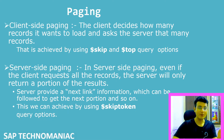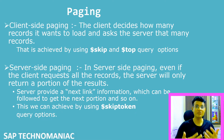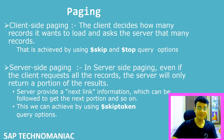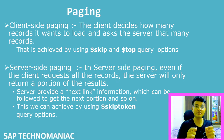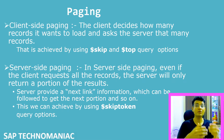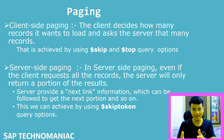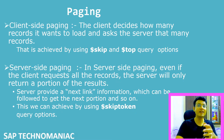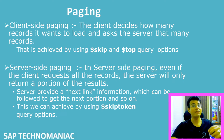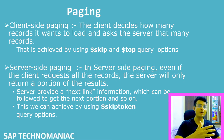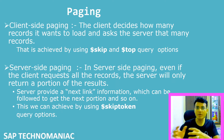Skip and top query options help us achieve client-side paging. In client-side paging, the client decides how much data to get from the backend. For example, to get the initial 10 entries, pass skip=0 and top=10. For the next 10 entries, pass skip=10 and top=10 to get entries 11 to 20.